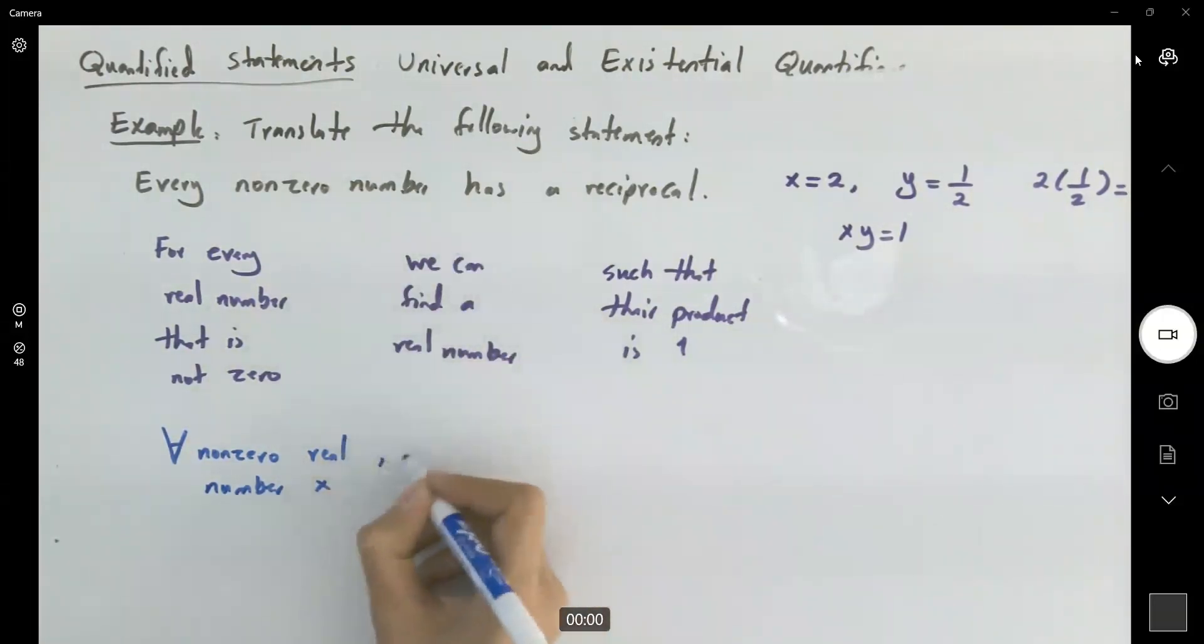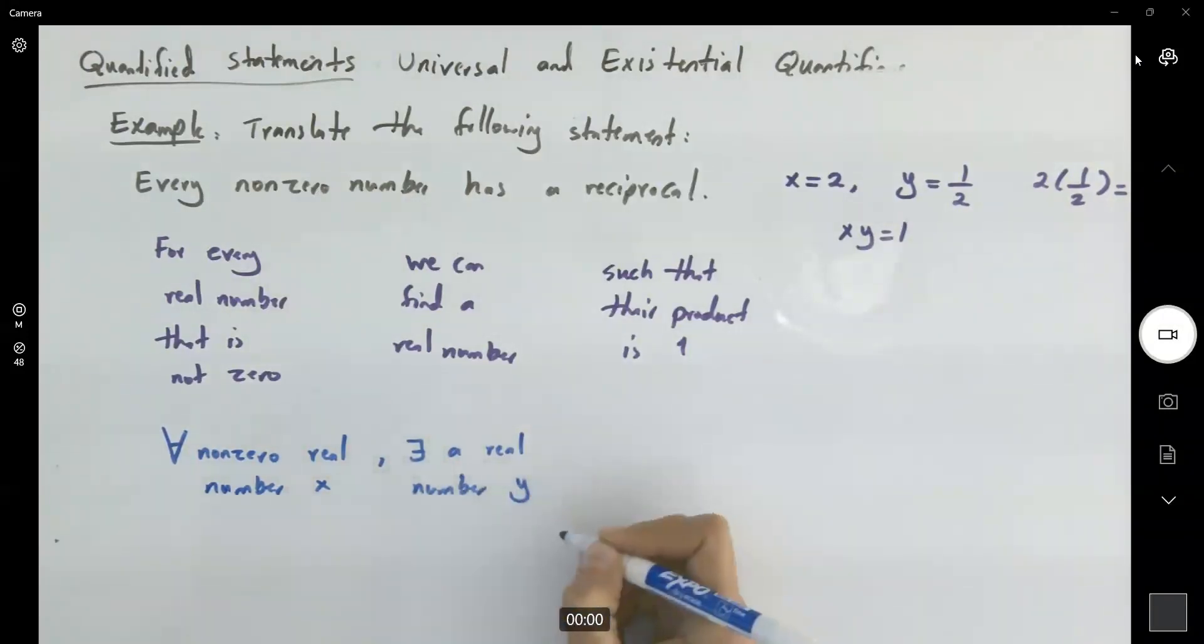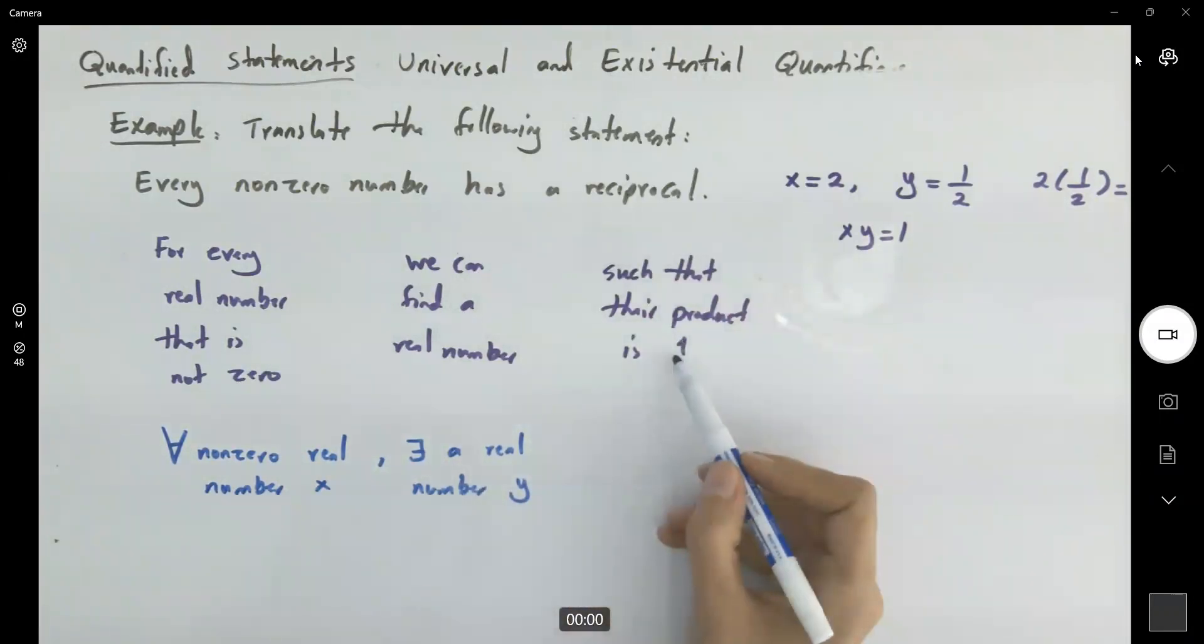There is a real number like y, such that, with what condition? The condition is that if I multiply x and y, the output is 1. xy is 1.